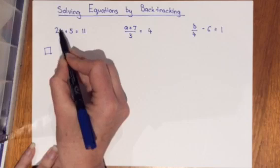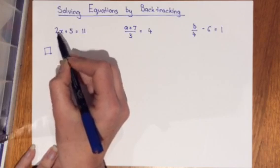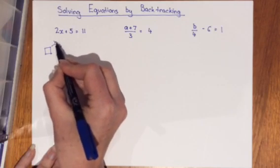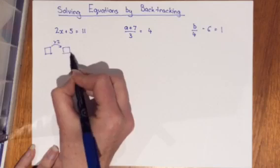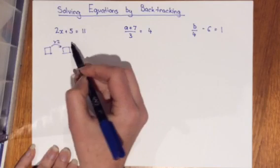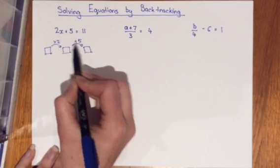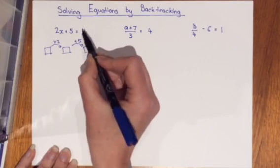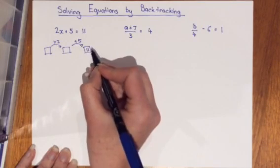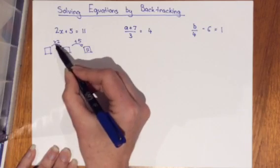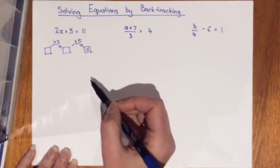We can see the first thing that's happened to the x is it's been multiplied by 2. The second thing is 5 has been added. So we write what has happened. So it's been multiplied by 2 and 5 added. That gave me a result of 11. We now want to undo these things to find what the original number was.